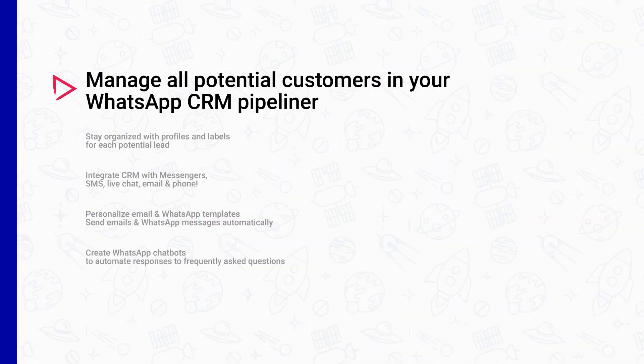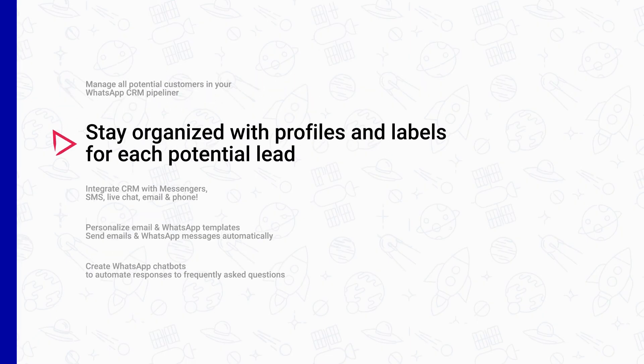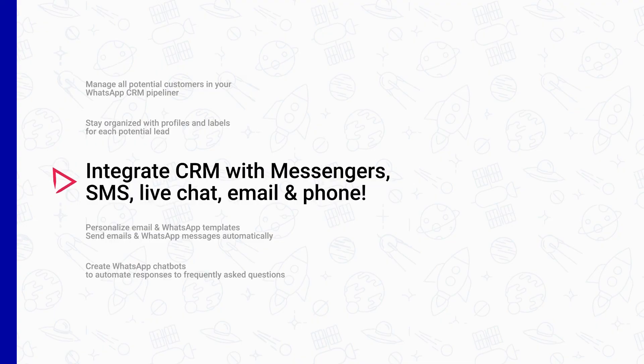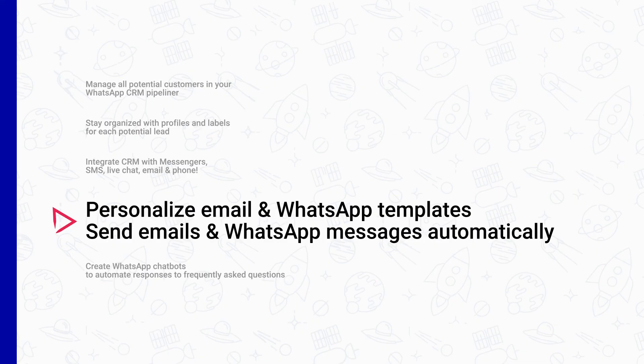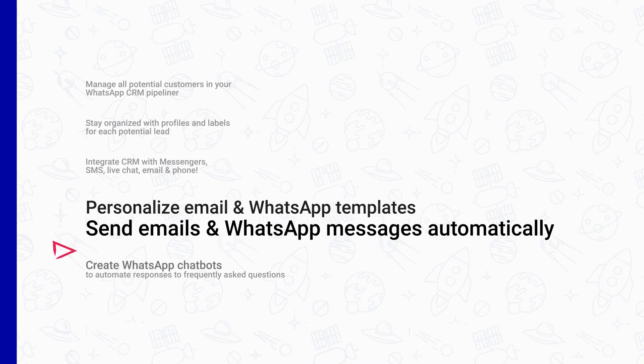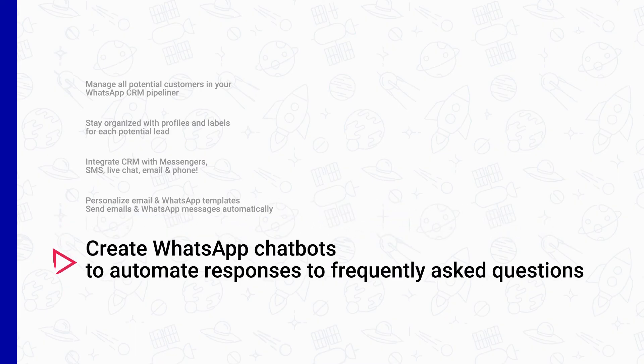But this is not the only thing Como can do for you. With our platform, you can manage all your potential customers in your WhatsApp CRM pipeline. You can stay organized with profiles and labels for each potential lead, communicate directly in the lead card with no switching apps, integrate CRM with messengers, SMS, live chat, email, and phone, personalize email and WhatsApp templates, send emails and WhatsApp messages automatically, and create WhatsApp chatbots to automate responses to frequently asked questions — all in just one platform. If you want to learn more about Como and what it's capable of, contact our team for a chat or a free demo session. For more details, go to the description below.